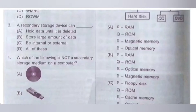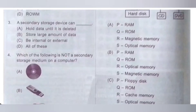Third question. A secondary storage device can: A) hold data until it is deleted; B) store large amount of data; C) be external or internal; D) all of these. A secondary storage device can hold large amount of data until it is deleted, and it can be either internal or external. So option D, all of these, is the correct answer.